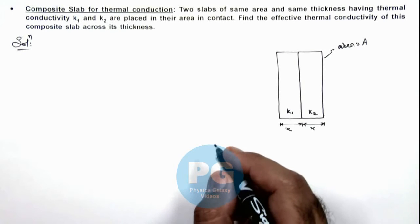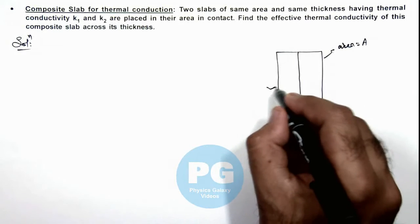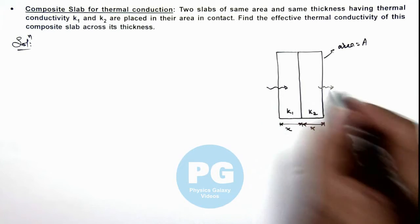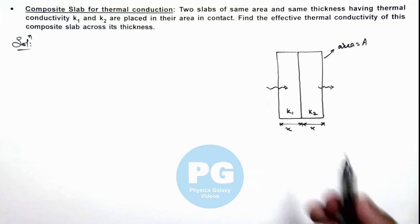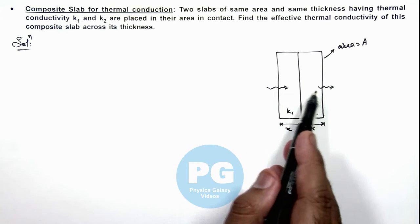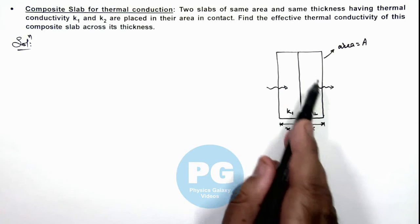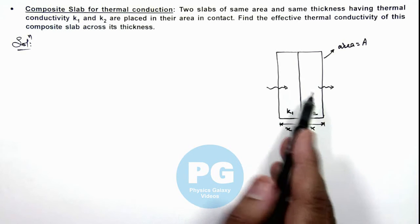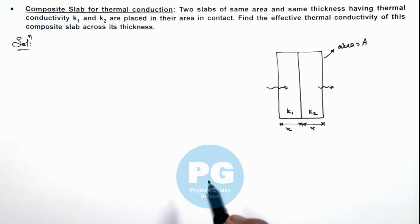So when heat will flow across the width of this composite slab, we can simply consider the thermal resistance of the composite slab to be equal to the individual thermal resistances in series.